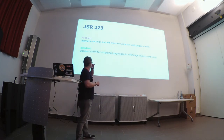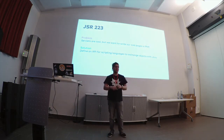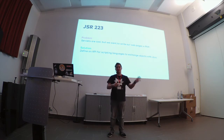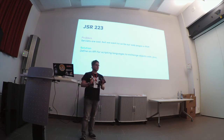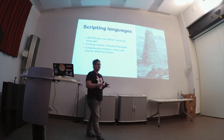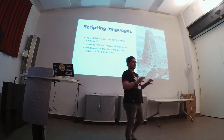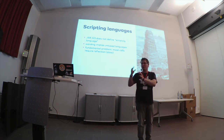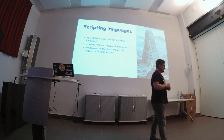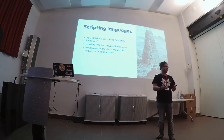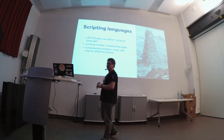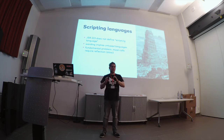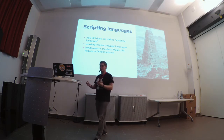Their solution was to define this API, and one of the main selling points was that you could exchange objects between the Java world and those other languages. They were talking in this proposal about scripting languages, though they didn't really define what they understood as a scripting language. Python would probably be part of the definition, although if you look at a real existing Python codebase you wouldn't really call it a scripting language anymore. The wording kind of implies they were talking about untyped languages — that was really the main goal.